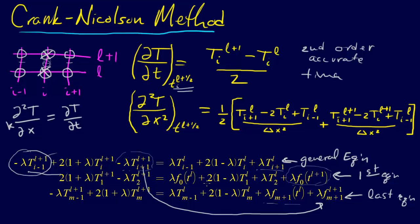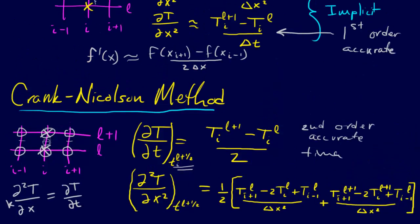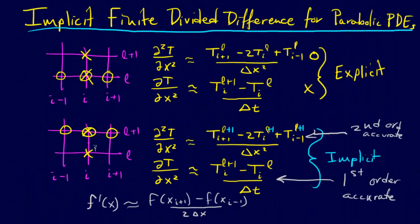So this is the Crank-Nicolson method for the finite difference method, and it's particularly suitable for parabolic partial differential equations. It's an implicit method. And that's an important distinction because the implicit methods don't have the stability problems and the convergence problems that the explicit methods have, as we found with explicit Runge-Kutta versus implicit ordinary differential equation methods. The same applies here.